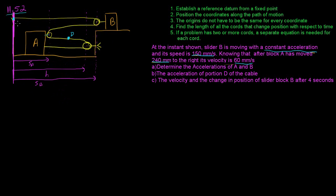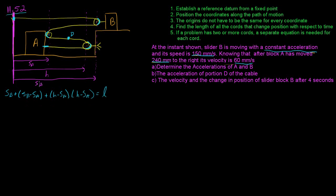Tracing the rope starting from point B, we have a length of SB, then SB minus SA, then H minus SA, and again H minus SA — ignoring the rope over the pulleys themselves. Adding these up and simplifying, we get: 2·SB minus 3·SA plus 2H equals L.